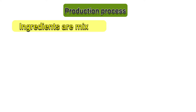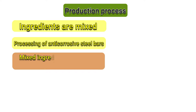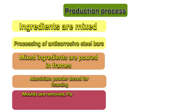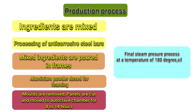The production process: the ingredients are mixed, then the processing of the reinforcement steel mesh. Mixed ingredients are poured in frames, then aluminum powder is dosed for forming. The molds are removed and panels are moved to the autoclave chamber for a period of 8-10 hours. The final steam pressure process is at a temperature of 180 degrees. The silica reacts with lime and gives the ALC Panels their high strength qualities.